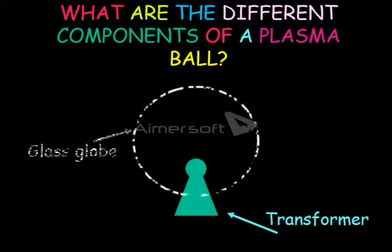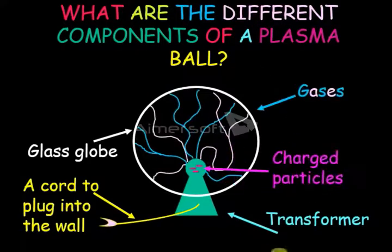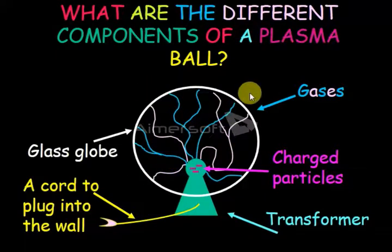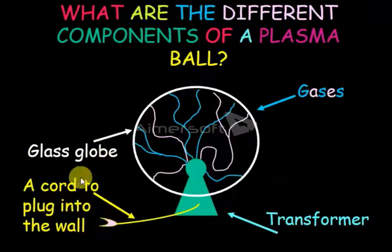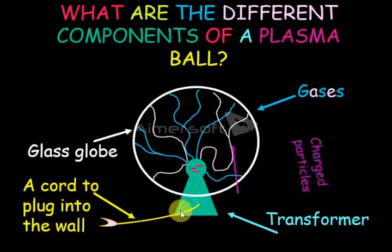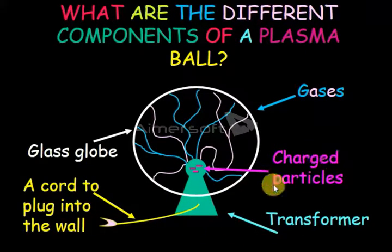What are the different components of a plasma ball? This is called a glass globe, gases, charged particles, a cord to plug into the wall, and transformers and charged particles.